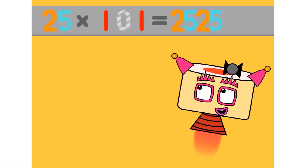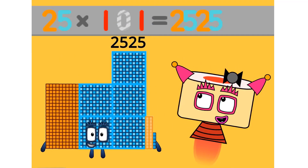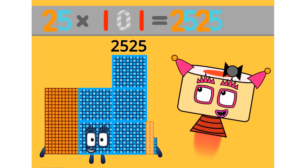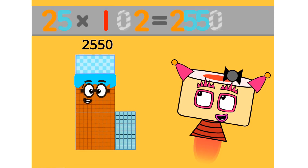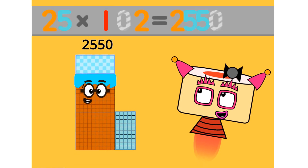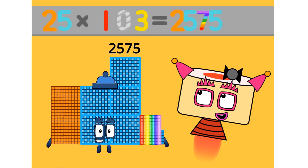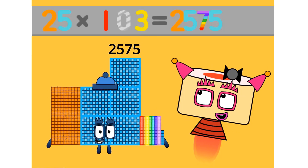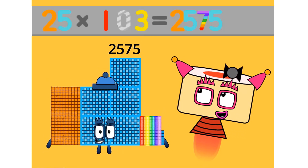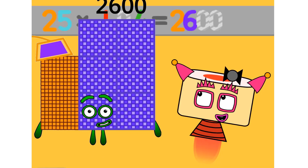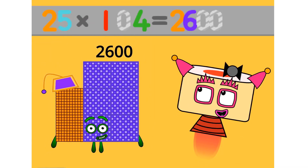25 times 101 equals 2525. 25 times 102 equals 2550. 25 times 103 equals 2575. 25 times 104 equals 2600.